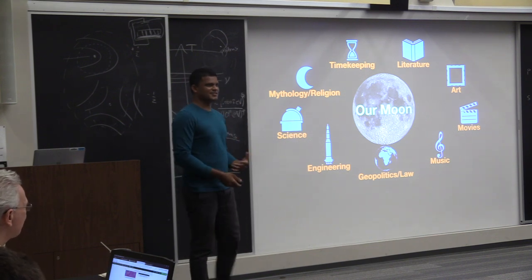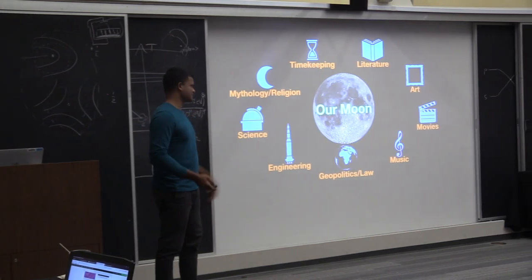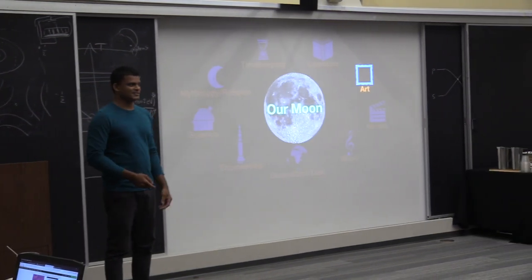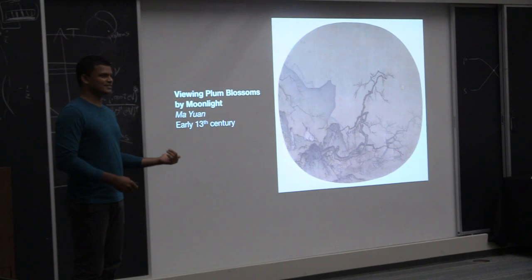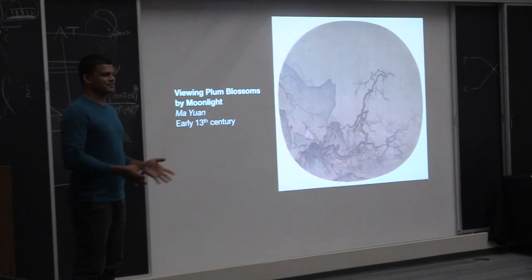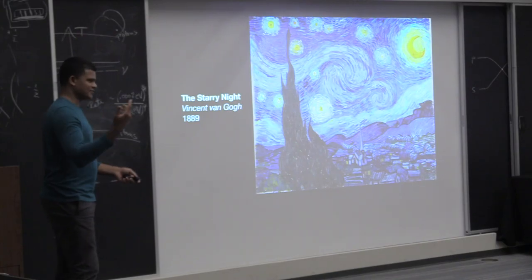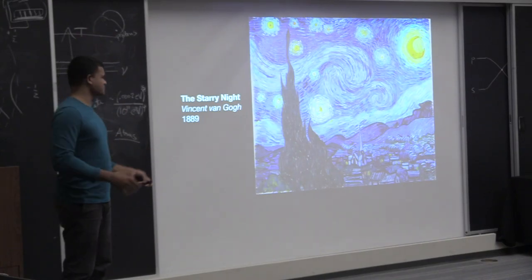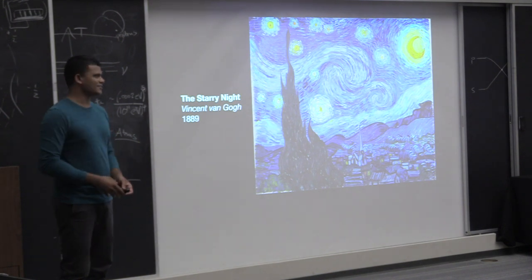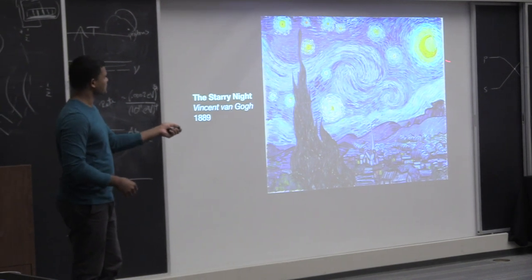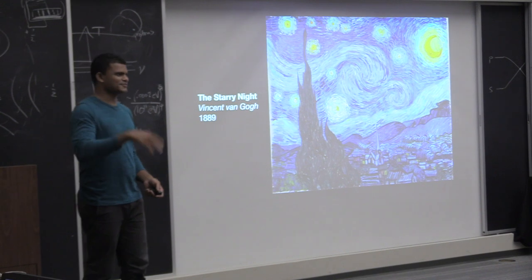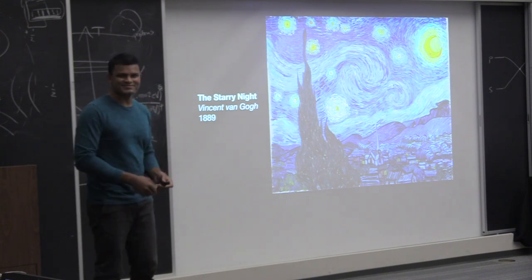The moon has a lot of meaning through human history. One of the things we can look at is art. This is the oldest painting I can find so far of the moon. I'm sure there are older ones. It's from the 13th century. This one you are most probably familiar with, Starry Night by Vincent van Gogh. There's the moon, the crescent is also kind of swirly, which is van Gogh.